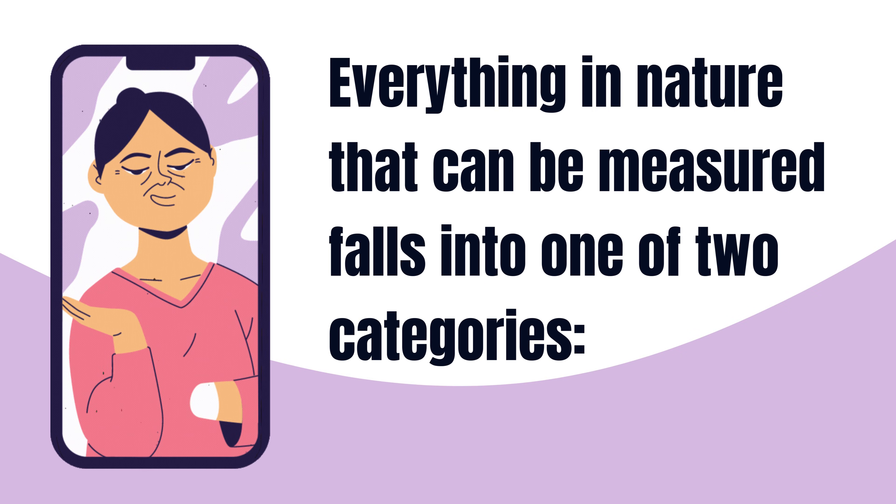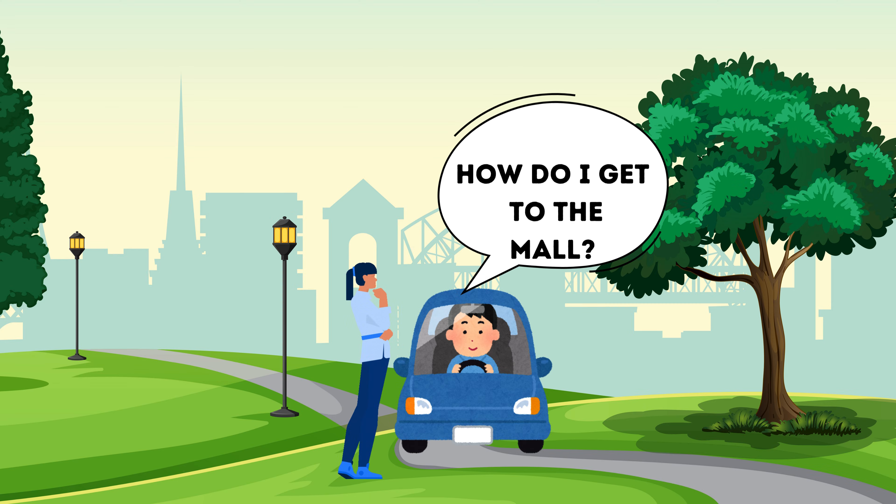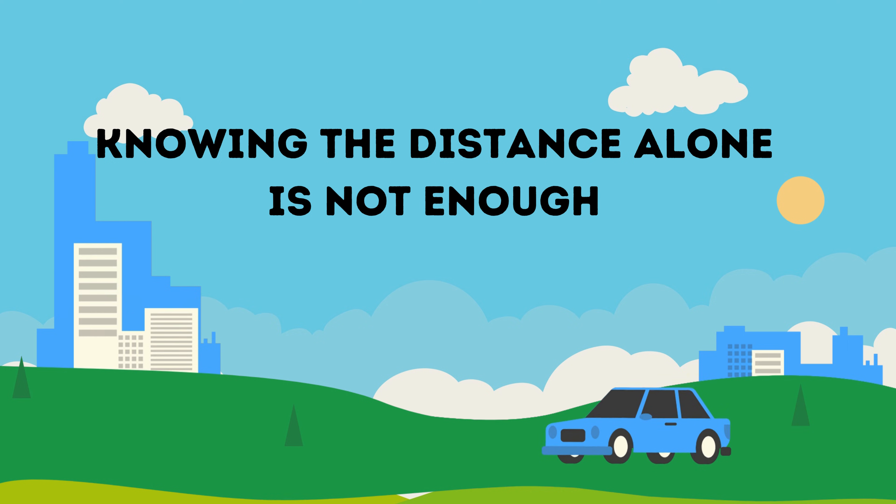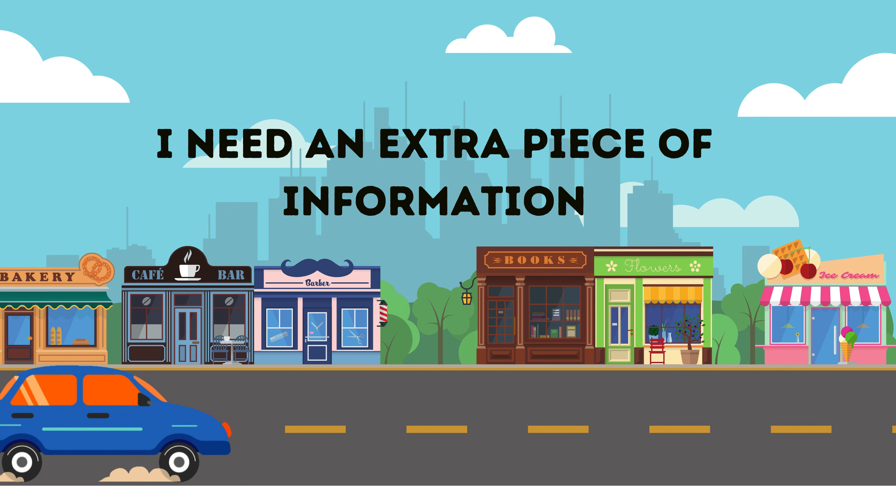Everything in nature that can be measured falls into one of two categories: scalar or vector. Suppose I ask someone how to get to a particular store, and they tell me it's 400 metres away. Would that be enough information? No. What they've given me is the distance, or magnitude, which is a scalar quantity.